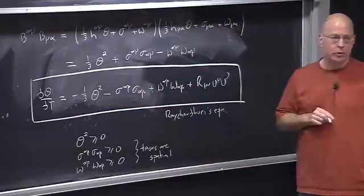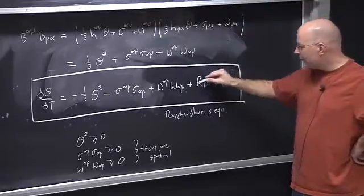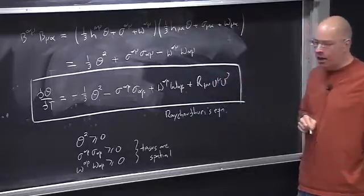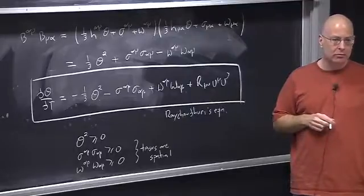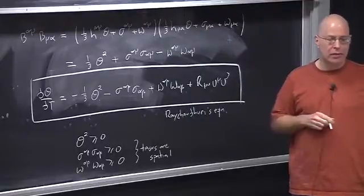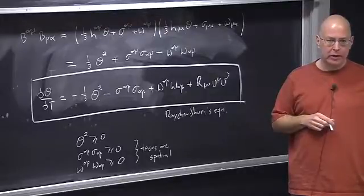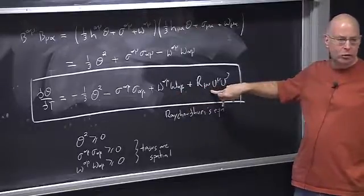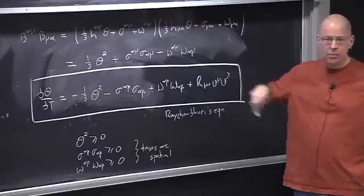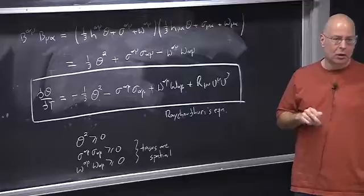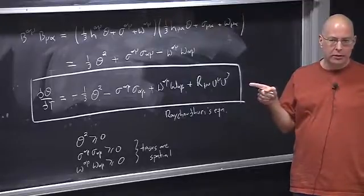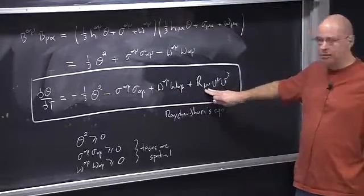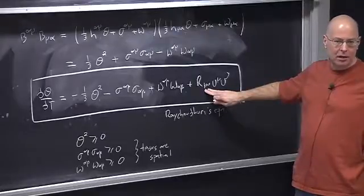The focusing theorem will come out if I kill the ω² term and impose restrictions on the Ricci term. Note: I had a sign error earlier — after correcting it, the Ricci term is indeed –R_μν u^μ u^ν. So I want to impose conditions on this so it's always positive, kill the ω term, and then everything on the right-hand side is negative. That gives the focusing theorem: dθ/dτ ≤ 0.